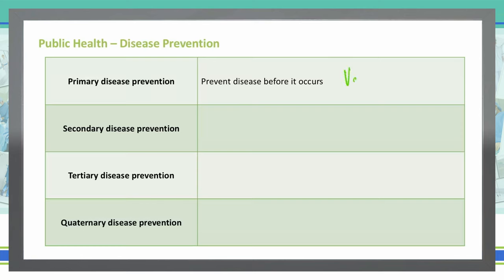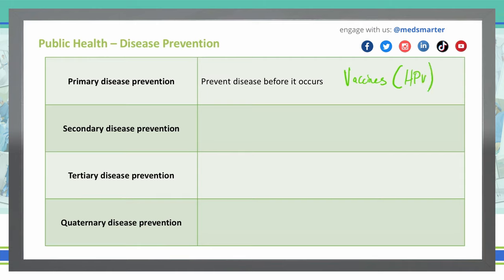Vaccines. For example, the HPV vaccine is a good example of primary disease prevention. We can prevent HPV infection from occurring and potentially prevent the occurrence of cervical cancer and other cancers down the road.